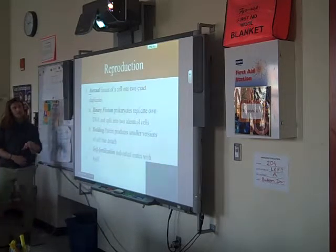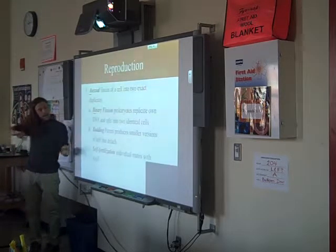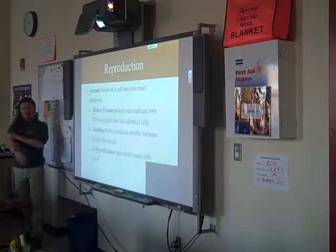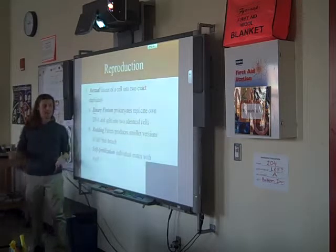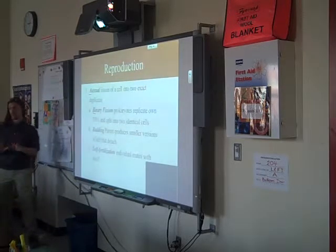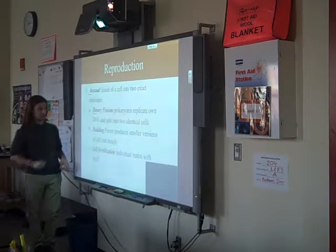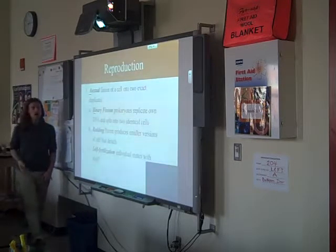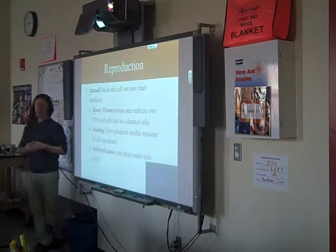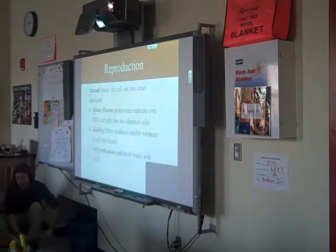Another form of asexual reproduction is self-fertilization, and this one's a bit of a gray area. Sperm and egg can be involved, which seems sexual, but because the organism doesn't have a separate mate, our textbook considers it asexual. So this is a situation where the organism takes its own sperm and its own egg and combines them into a new individual. This is done by many fungi, many plants, and some animals.